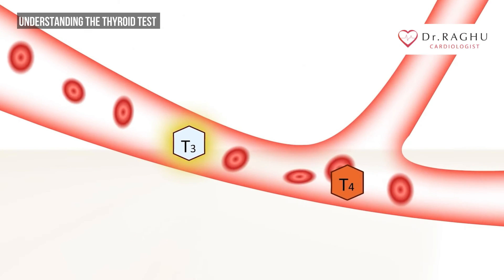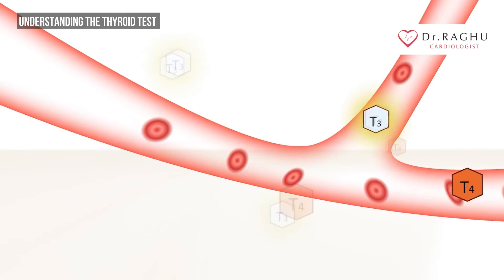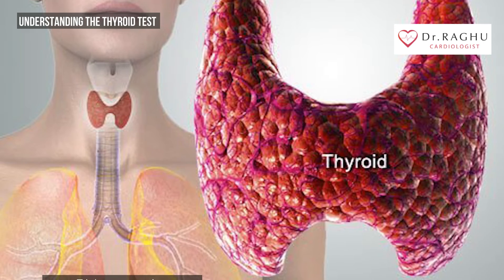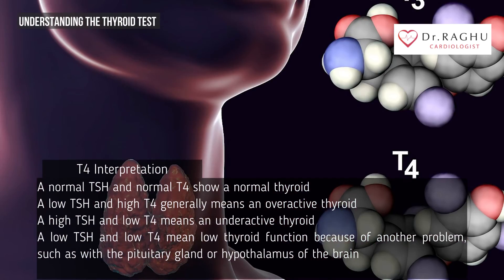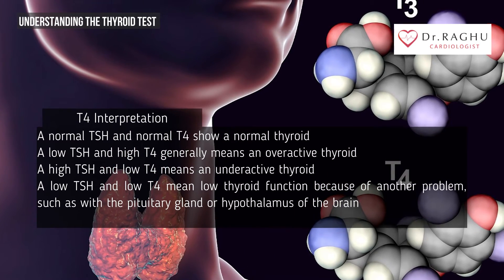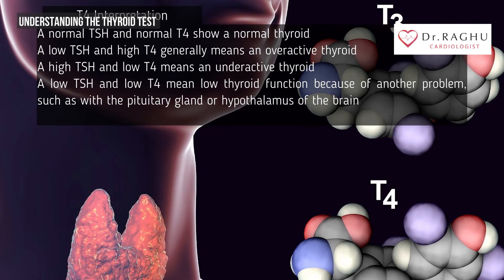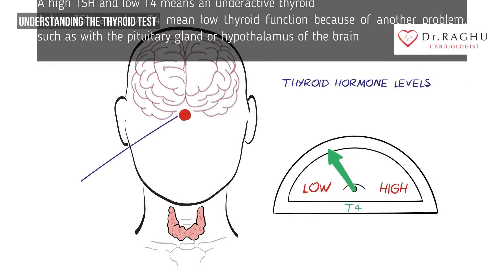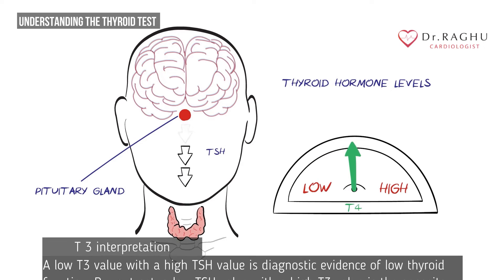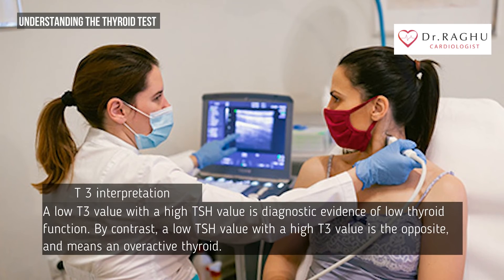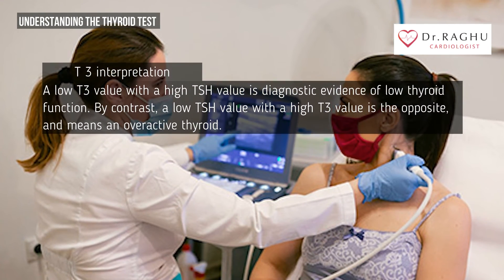By comparing TSH with T4 values, your healthcare provider may see a clearer picture of the thyroid issue. A normal TSH and normal T4 show a normal thyroid. A low TSH and high T4 generally means an overactive thyroid. A high TSH and low T4 means an underactive thyroid. A low TSH and low T4 means low thyroid function due to another problem, such as with the pituitary gland or hypothalamus. A low T3 with a high TSH is diagnostic evidence of low thyroid function, while a low TSH with a high T3 means an overactive thyroid.